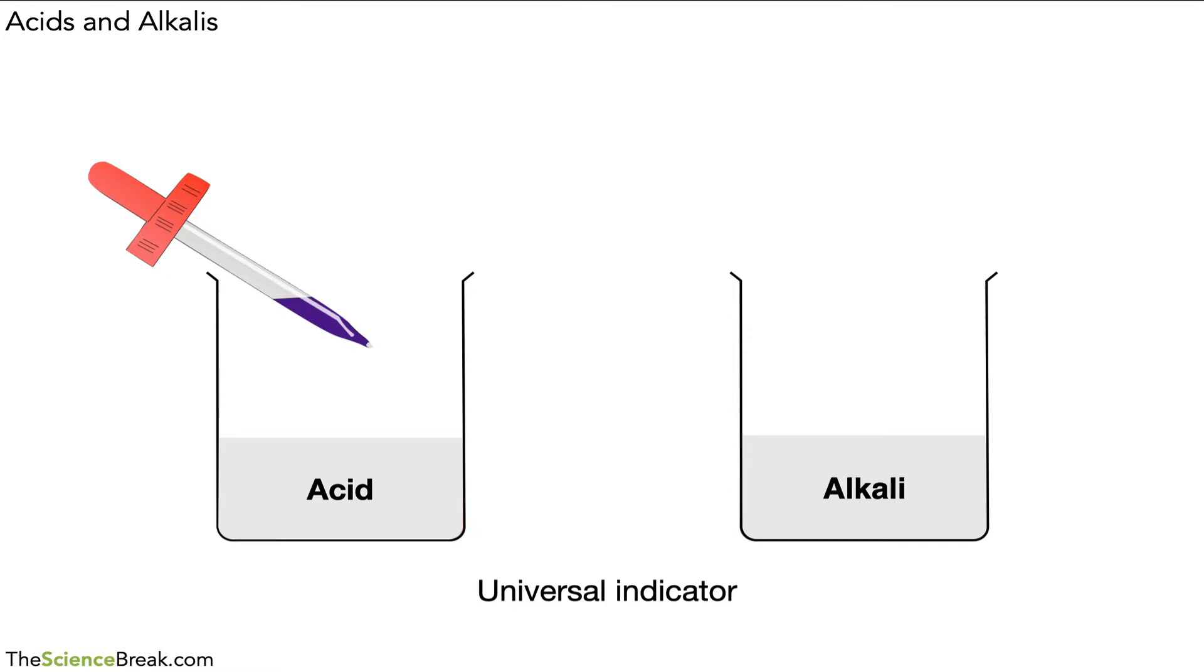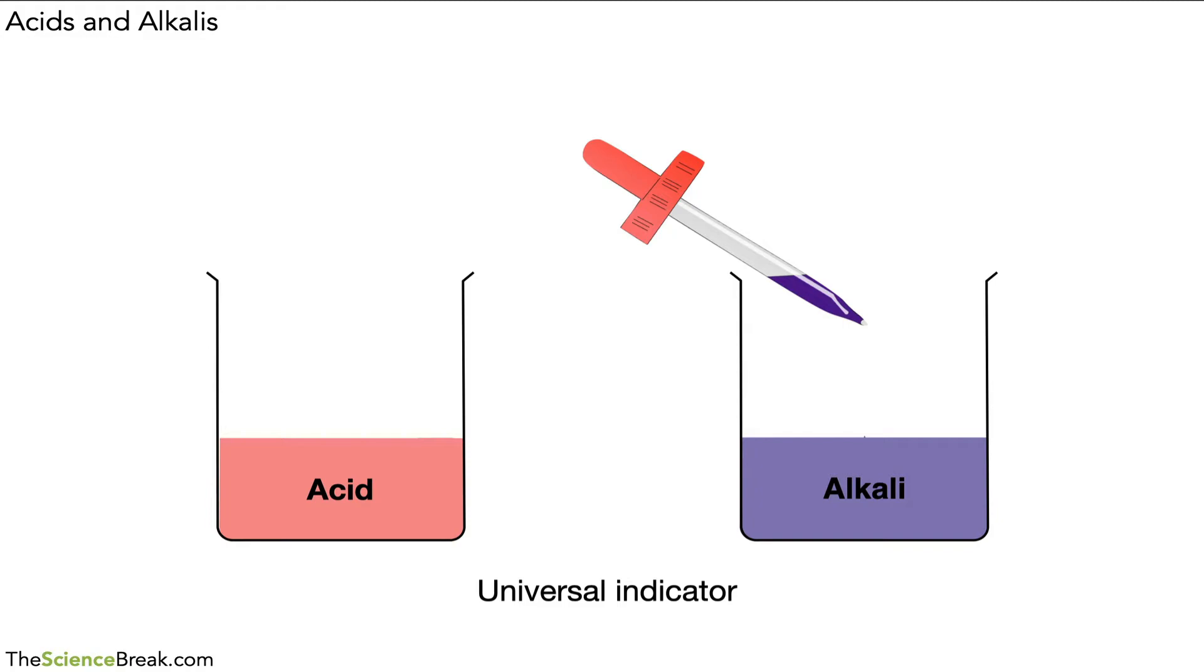We put a drop or two of universal indicator into our solution. When we have acid it goes like a red color, but it could be anything from a yellowy all the way up to quite a bright red color. When we try alkali it goes to a bluey color or a purpley color. Now while this tells us we've got acid and alkali, it also tells us extra information as well.